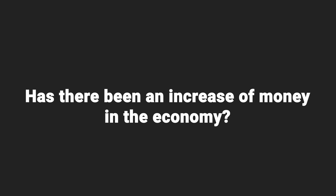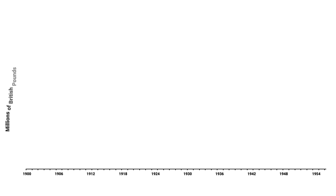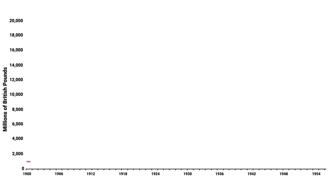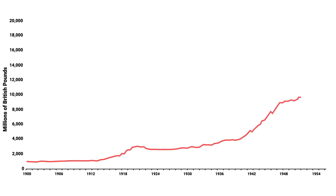We can look at a couple of charts to show this. Starting with the period from 1900 to 1955, the total amount of money in the economy increased over that period, with a couple of points where it was increasing particularly fast. These times were the World Wars — wars are expensive, you need to create a lot of money to fight them. You can see a bump for World War One and a bigger increase around World War Two.